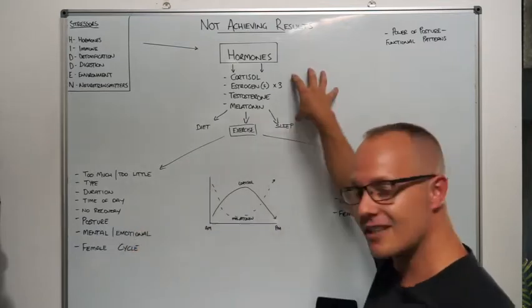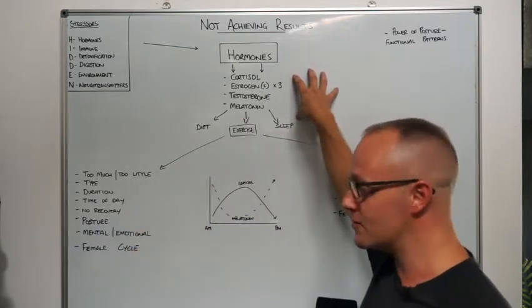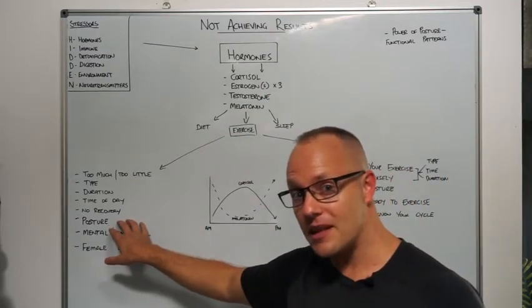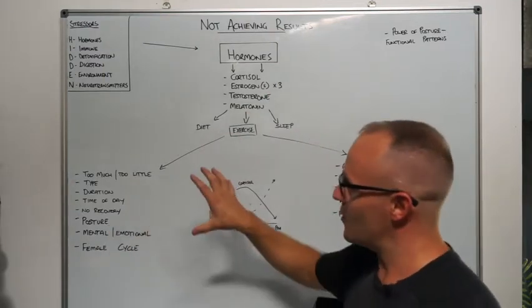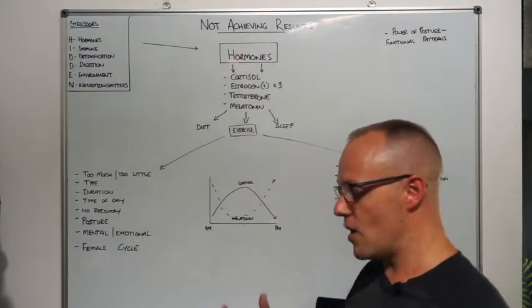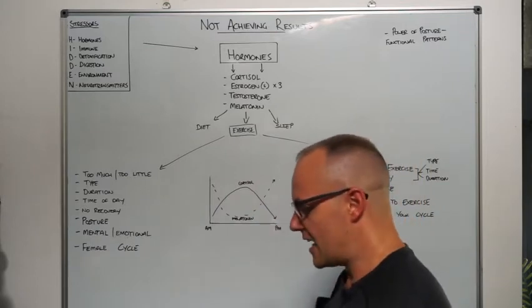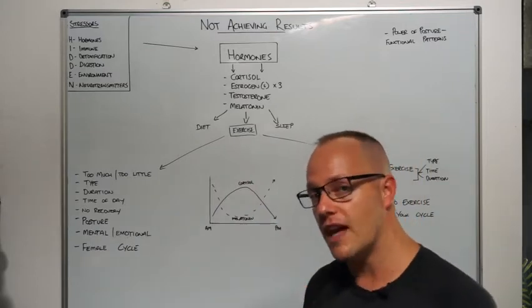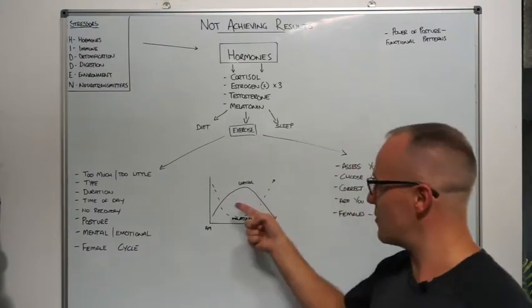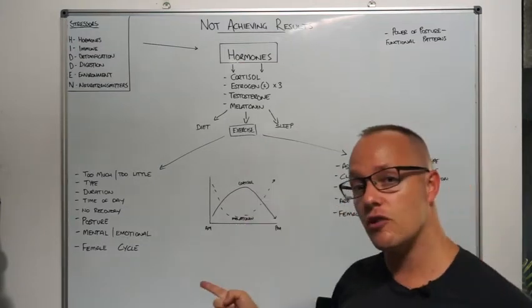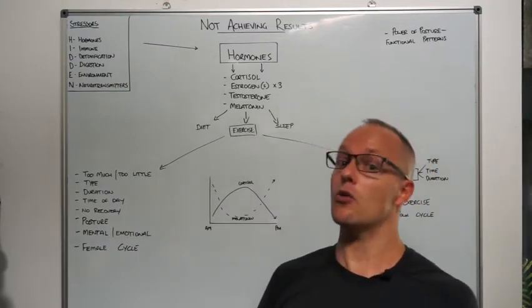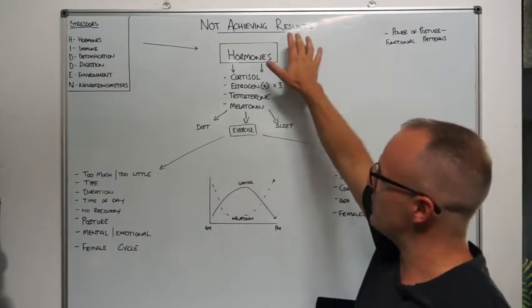The next crucial element that's going to have a massive impact on our hormones, which is quite surprising for a lot of people, is our posture. Posture plays a big part with the type of training we're doing and the results we're getting. If you have poor posture and you're not working to improve that, you're going to be constantly in a sympathetic state.